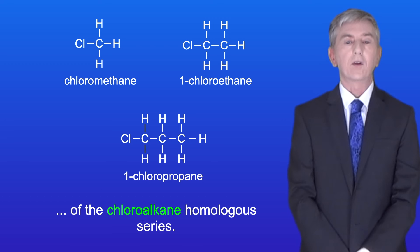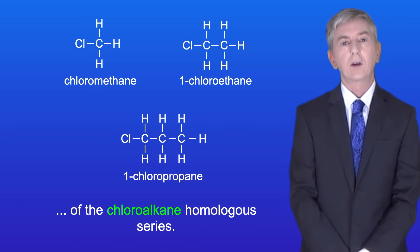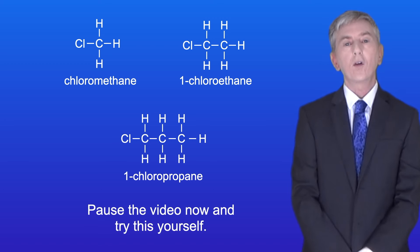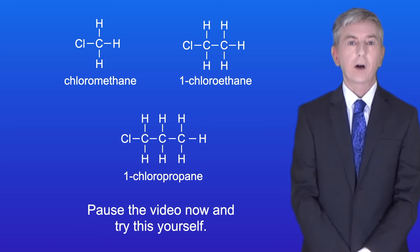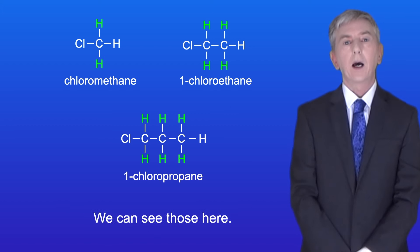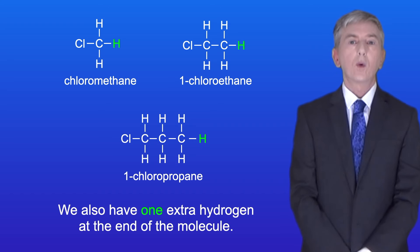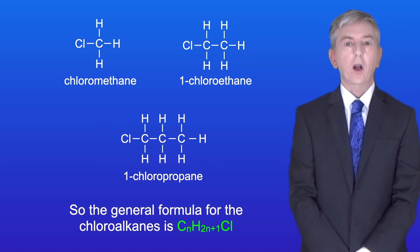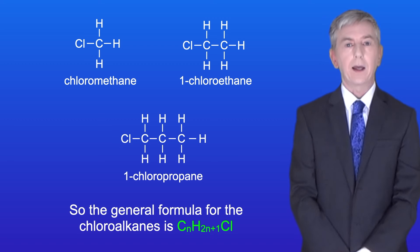I'm showing you here the first three members of the chloroalkane homologous series. I'd like you to work out the general formula for the chloroalkanes, so pause the video now and try this yourself. Each molecule has two hydrogen atoms for every carbon atom, and we also have one extra hydrogen at the end of the molecule, and each molecule also contains one atom of chlorine. So the general formula for the chloroalkanes is CnH2n+1Cl.